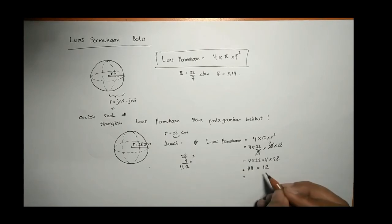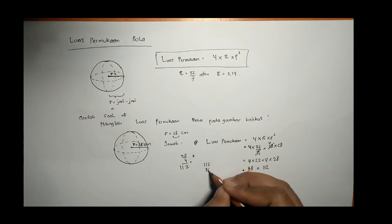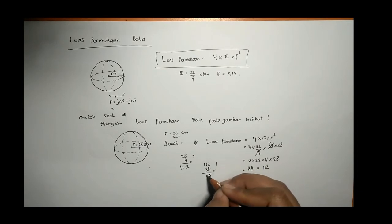Sehingga hasil akhirnya adalah perkalian dari 88 kali 112. Kita hitung bersusun lagi. 16, 8 tambah 1, 9, 8 tambah 1, 8. Ini sama, dikali 8 hasilnya juga 8, 96.